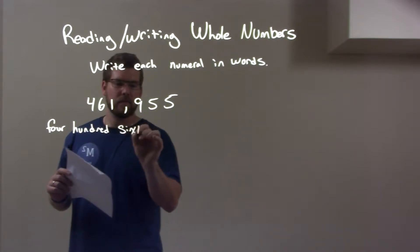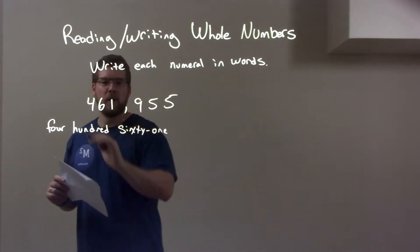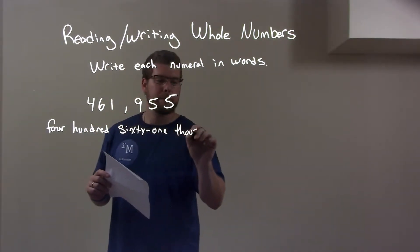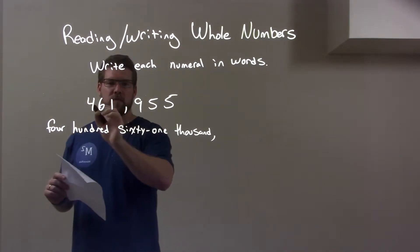So 60 and 1, that's 61. And this is in the thousands section, so 61 thousand. So we have four hundred sixty-one thousand right here.